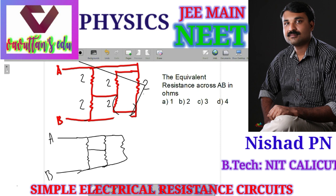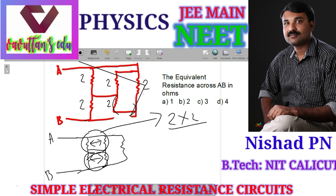This is the simplified circuit. Now, this 2 ohm and this 2 ohm are in parallel. This section is parallel, so the equivalent resistance is 2 into 2 divided by 2 plus 2, that is equal to 4 divided by 4, which equals 1 ohm.